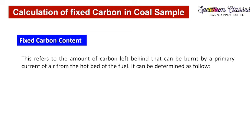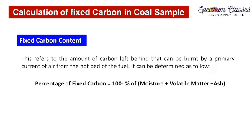Now for the determination of fixed carbon content: the more the fixed carbon, the better the calorific value of the coal sample. The percentage of fixed carbon can be calculated by subtracting the sum of percentage moisture content, percentage volatile matter content, and percentage ash content from 100.